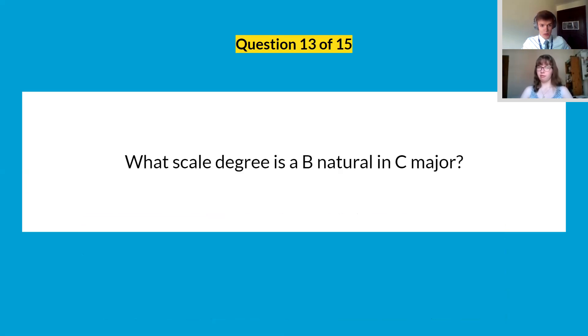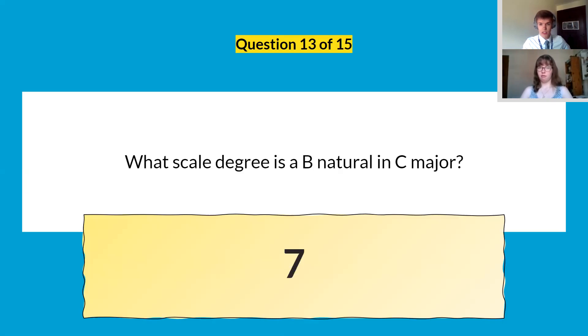Question number thirteen, what scale degree is B natural in C major? So think about what notes of a C major scale are in order and you'll find that B natural is the seventh one if we count the C as number one. So scale degrees have numbered names but we can also give them word names but we didn't really need that here. All we needed is the number.